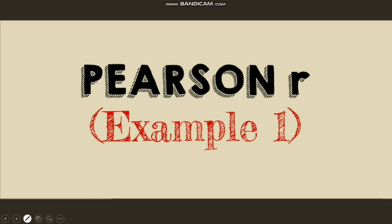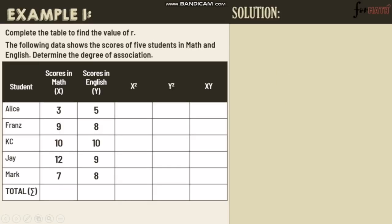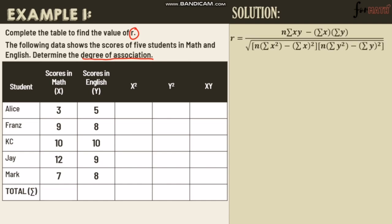Let's have example number 1. Complete the table to find the value of R. The following data shows the scores of 5 students in math and English. Determine the degree of association. Since the data is quantitative, we use Pearson's R. The formula requires the summation of X, Y, XY, X-squared, and Y-squared.